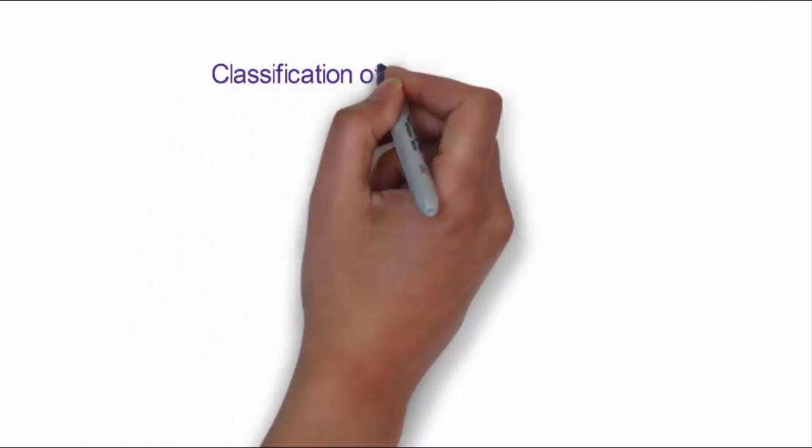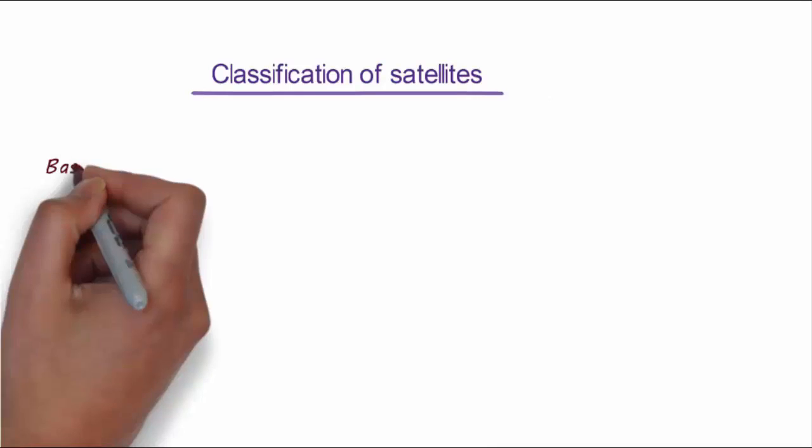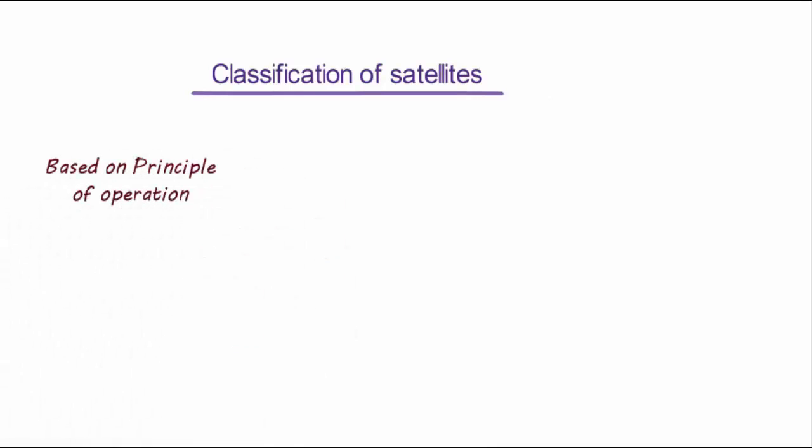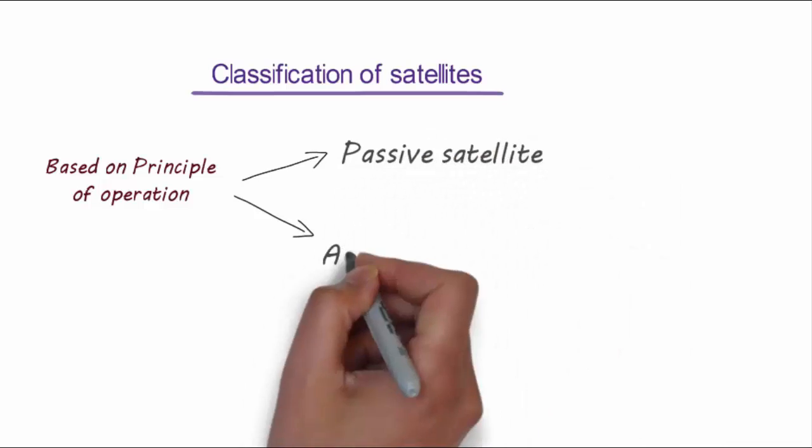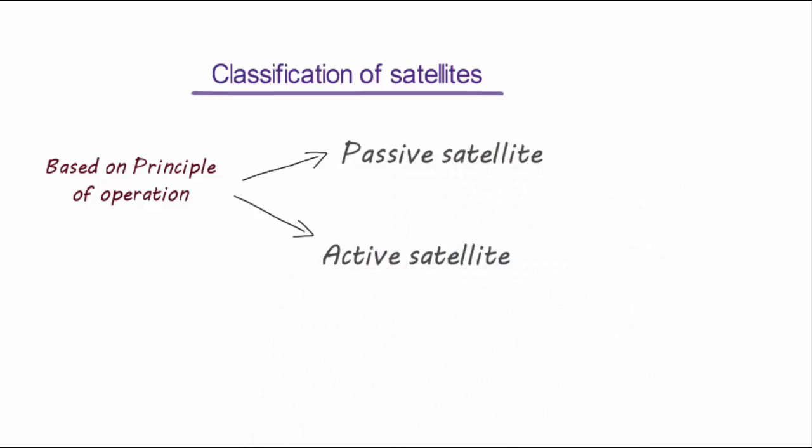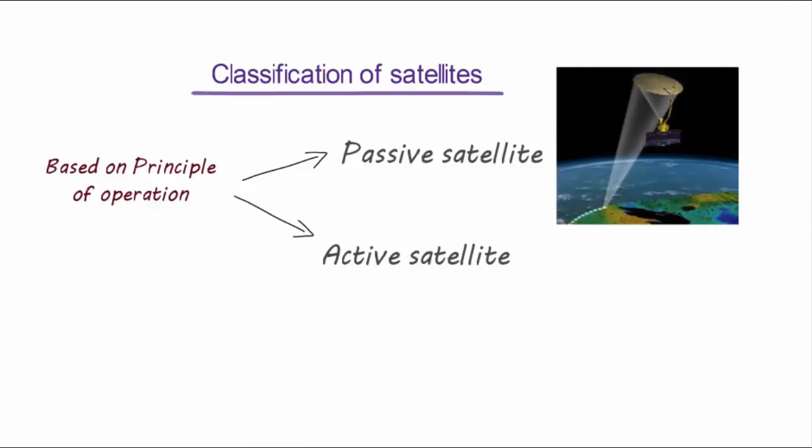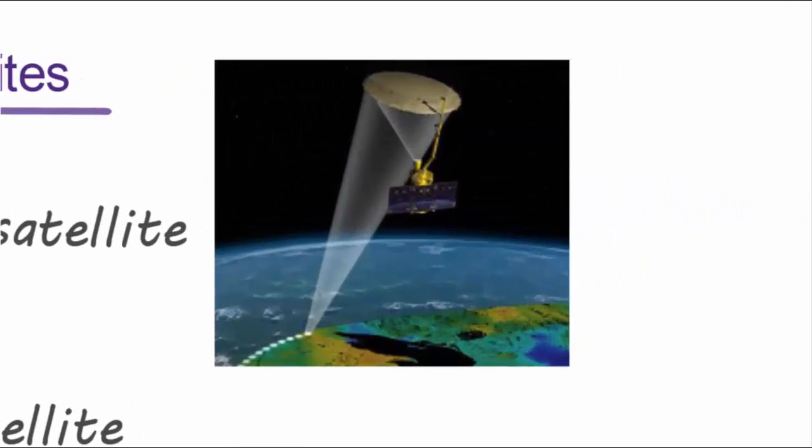Now let's come to the various classification of satellites. Based on the principle of operation, satellites are divided in two types: passive satellites and active satellites. The passive satellites are the one that cannot generate power. It has a metal cover over it which reflects the signal coming from one part of the earth to the other part. The coverage distance is very less for passive satellites.